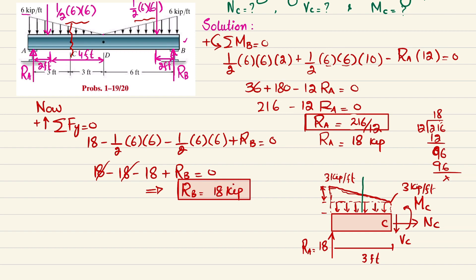Converting the uniformly distributed load (3 kips/ft over 3 ft) to a point load: 3 times 3 equals 9 kips, acting at half of 3 feet, which is 1.5 feet. Converting the uniformly decreasing load to a point load: (1/2)(3)(3) equals 4.5 kips, acting at L/3 from the denser side: 3/3 equals 1 foot.